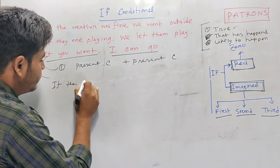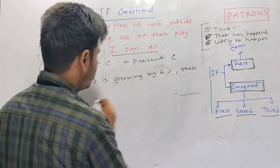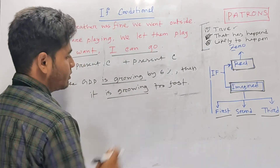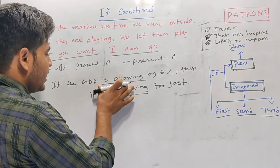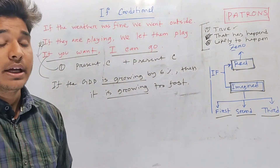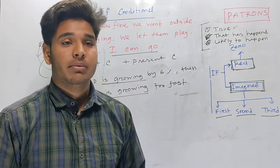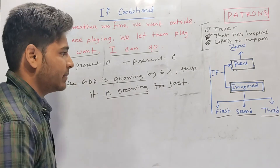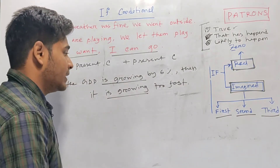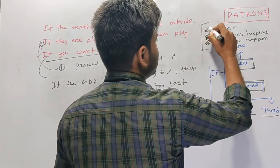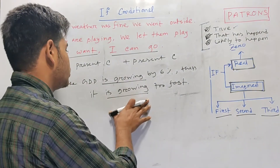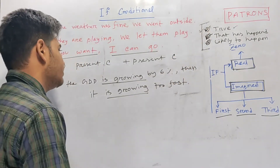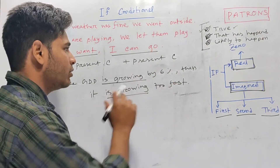If the GDP is growing by 6%, then it is growing too fast. If we are doing true, this means true. If we are doing present indefinite tense, then we can use zero condition. If we are doing real, we can do true.